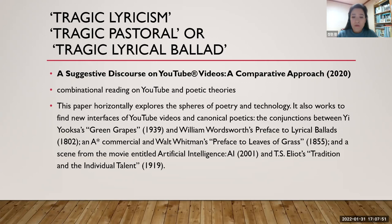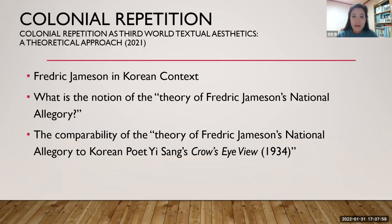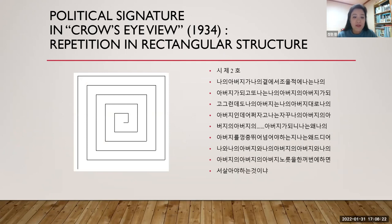What I call tragic lyricism — this oxymoron functions as a kind of style of colonial poem genre. This colonial issue continues in my term colonial repetition. I read colonial repetition as what I call third world texture aesthetics. It is the study of Frederick Jameson in Korean context. I apply his theory to Korean poetry, and I discovered this political signature in Crow's Eye View — the colonial repetition in this rectangular structure.